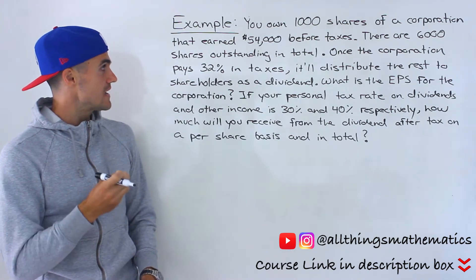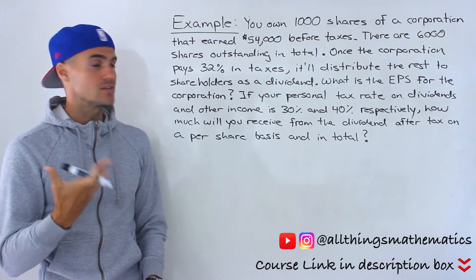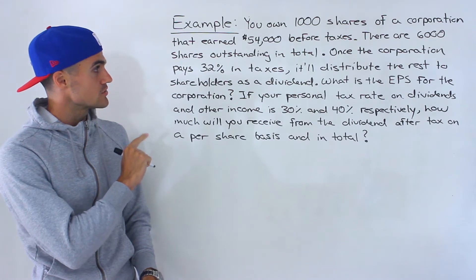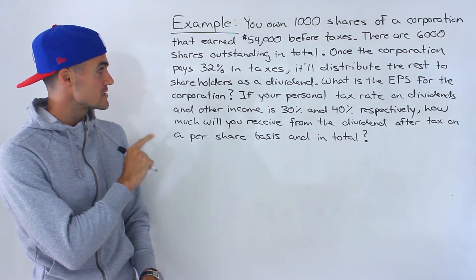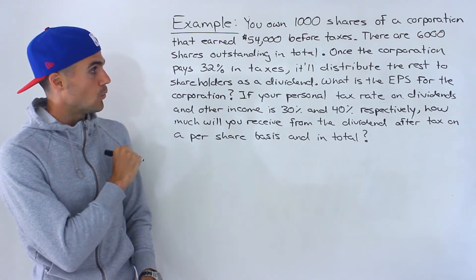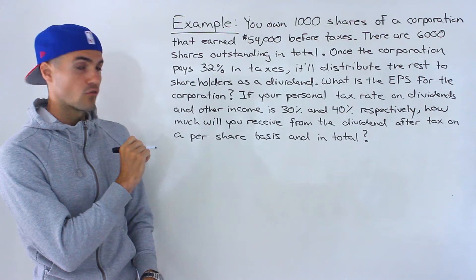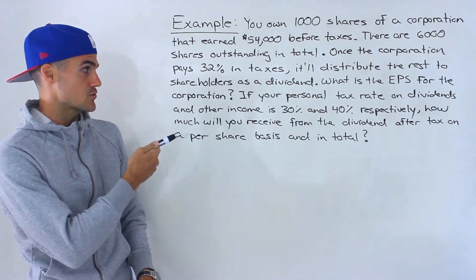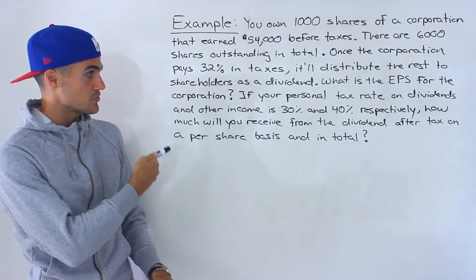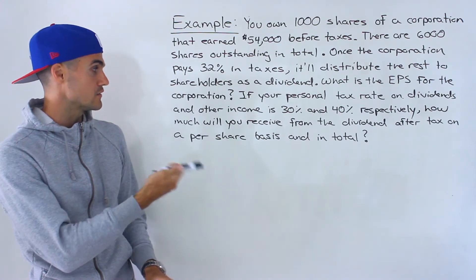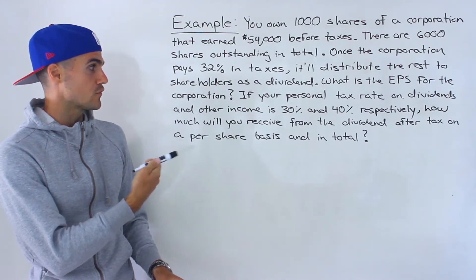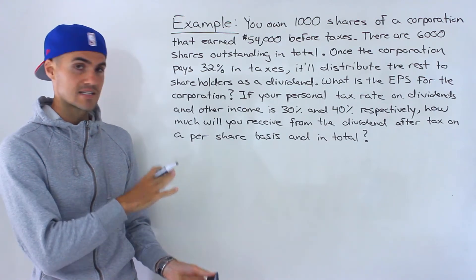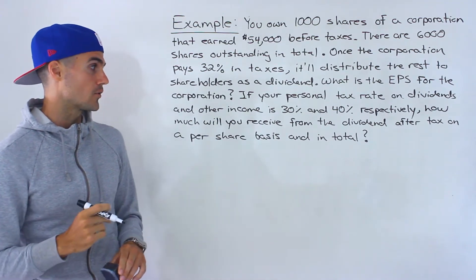There are 6,000 shares outstanding in total. Once the corporation pays 32% in taxes, it will distribute the rest to shareholders as a dividend. What is the earnings per share for the corporation? And then if your personal tax rate on dividends and other income is 30% and 40% respectively, how much will you receive from the dividend after tax on a per share basis and in total?